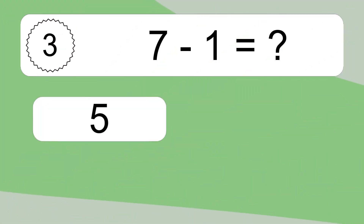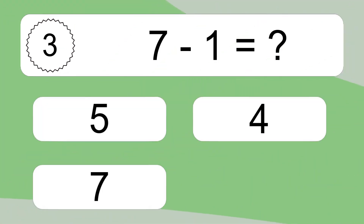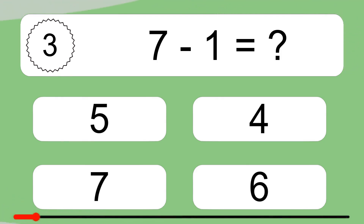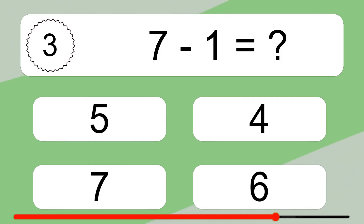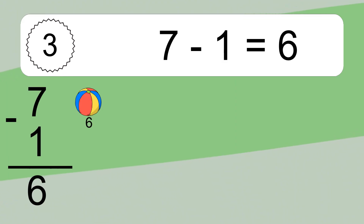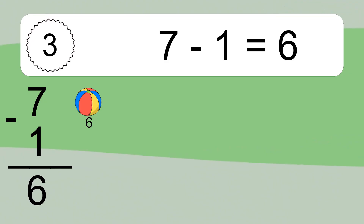7 minus 1 equals what? 7 minus 2 equals 6. Let's count it: 6.